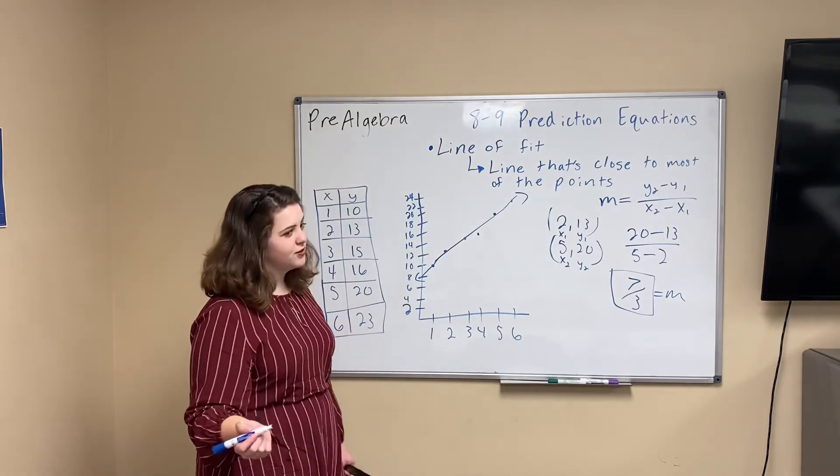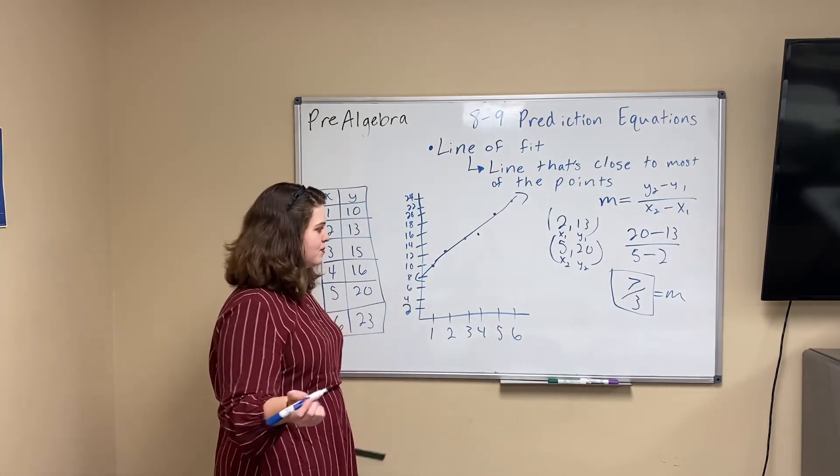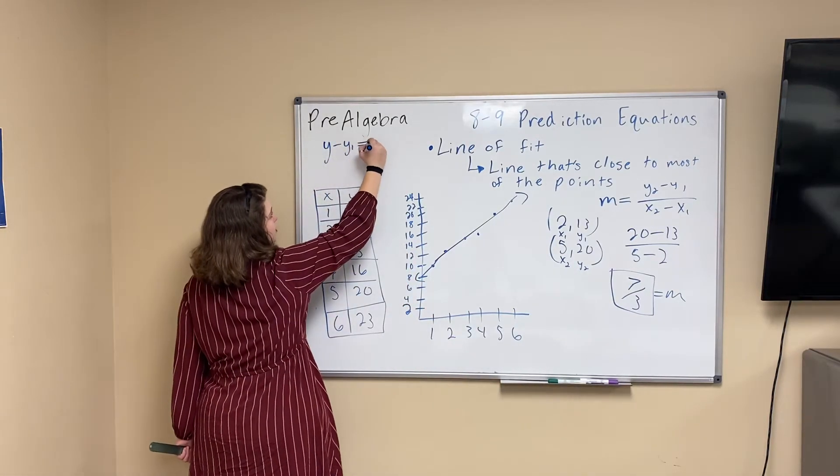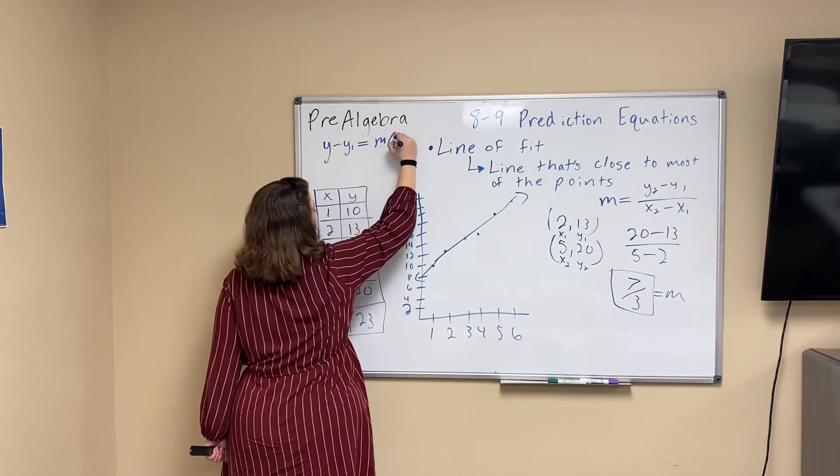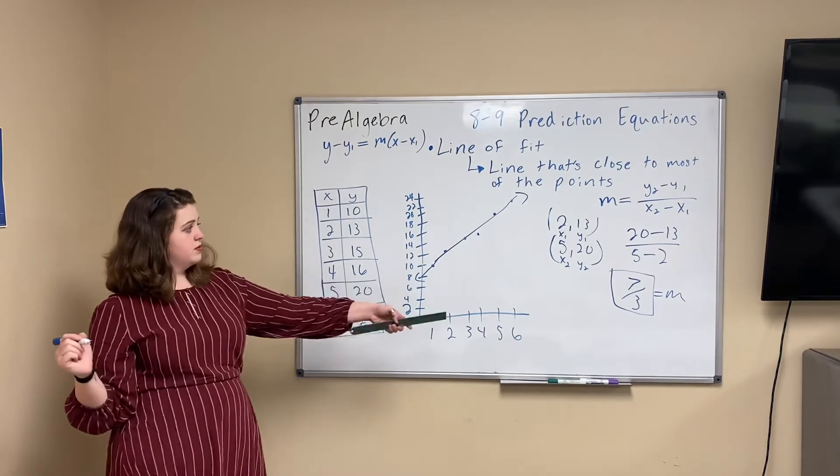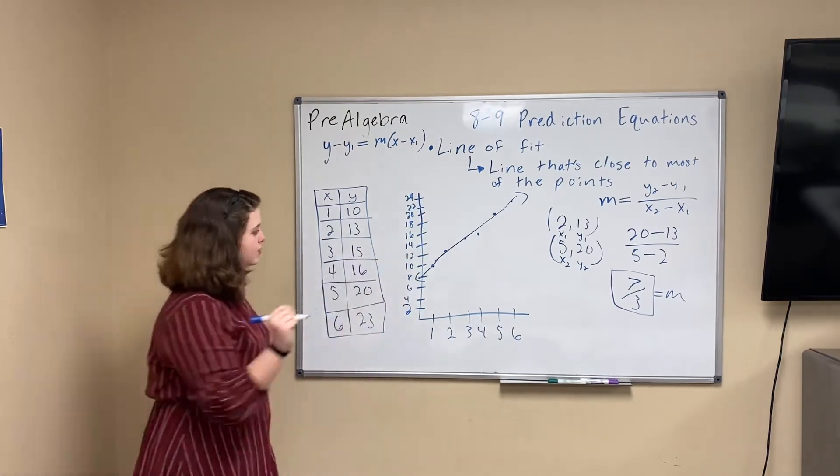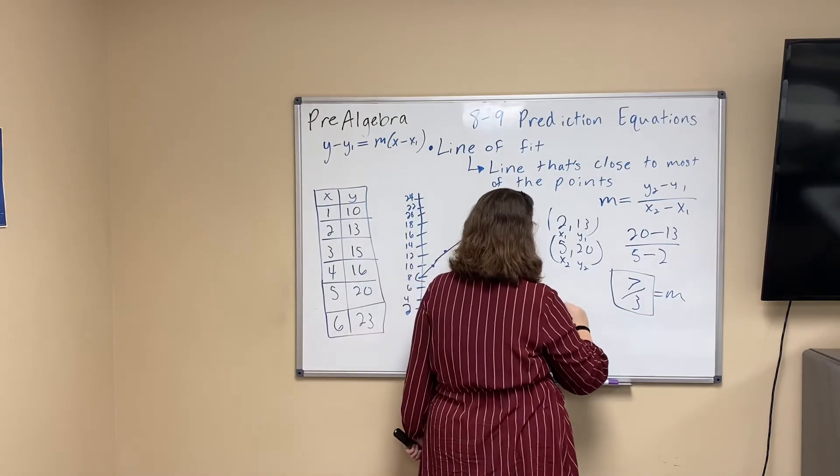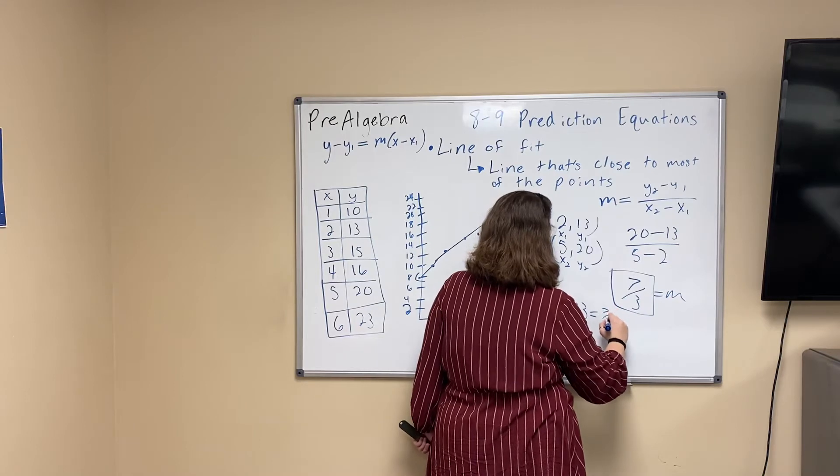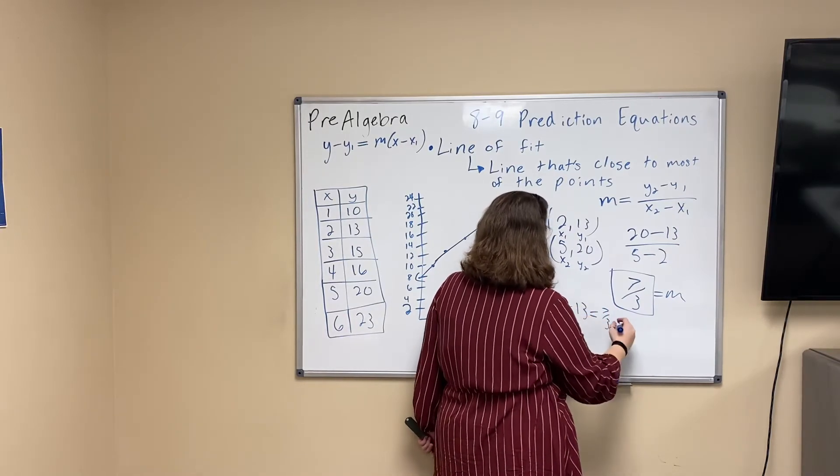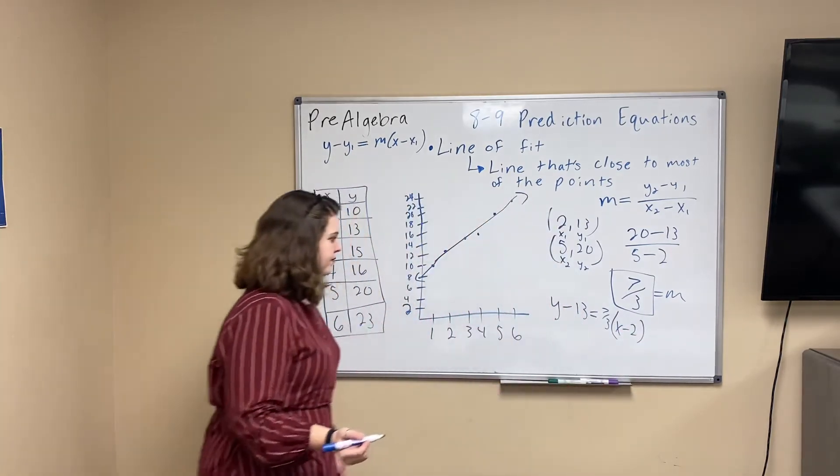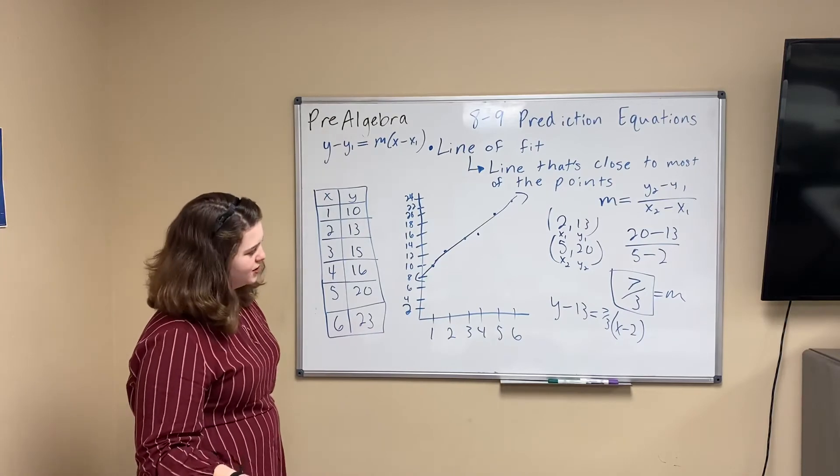Now, what are the other components we need for our point-slope form? Remember, it's y minus y1 equals our slope times x minus x1. Now, we found our slope, and we've got our x1 and our y1, so we can go ahead and write our equation. y minus 13 equals 7/3 times x minus 2.